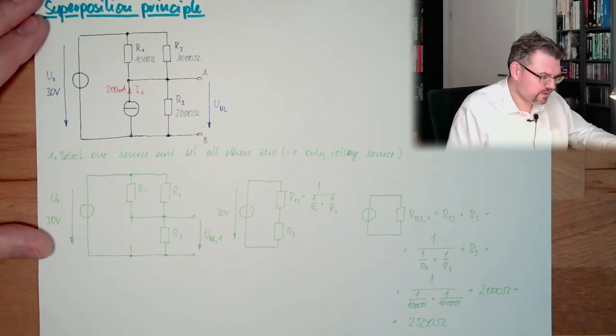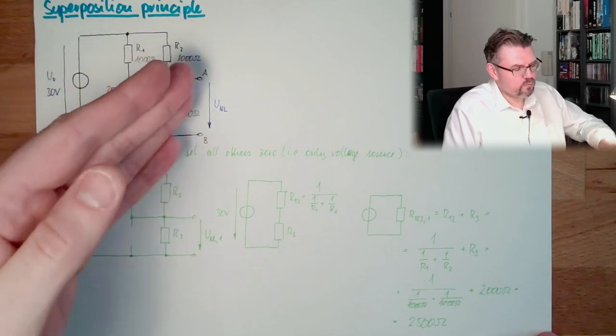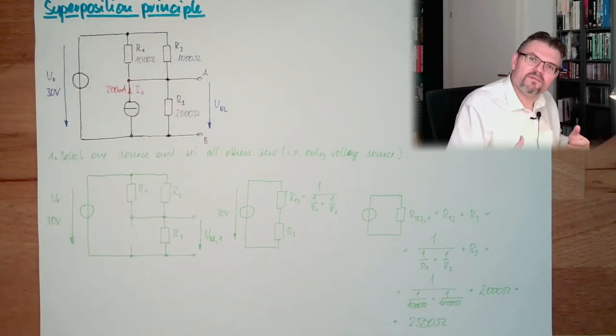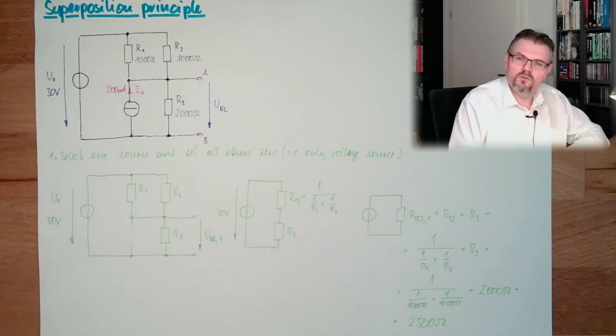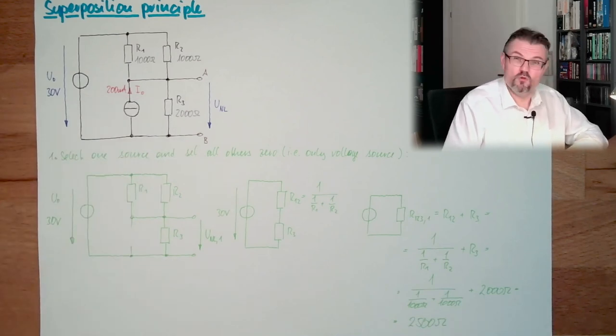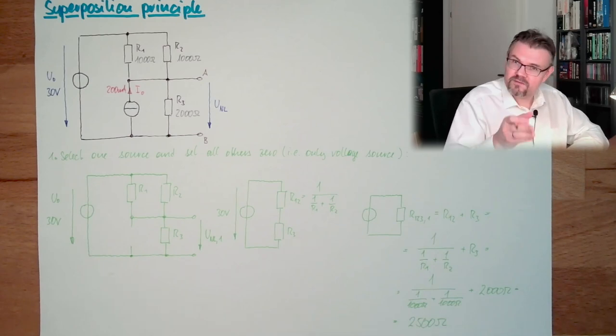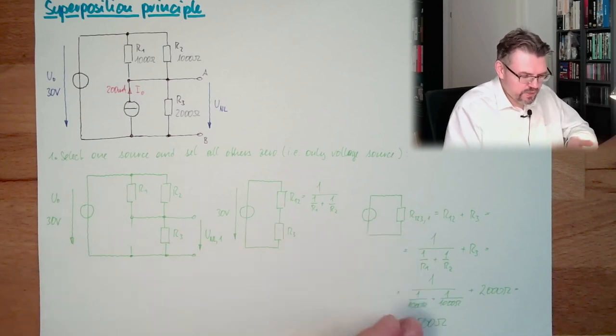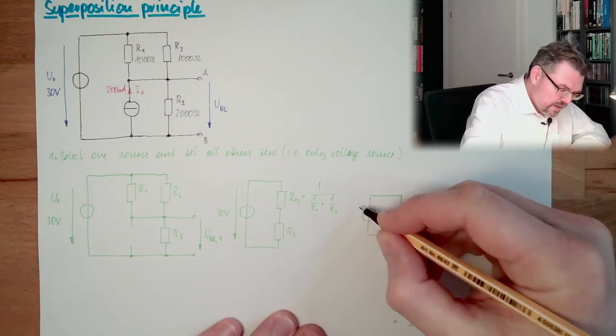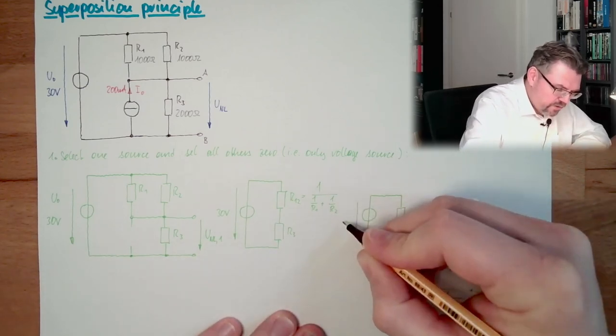And this is 500 plus 2,000 ohms. You can type it in your calculator, but I know 1,000 and 1,000 in parallel is only half of it. It's 500 and 2,000 more. So it's 2,500 ohms. So here we have 2,500 ohms and here we have 30 volts.